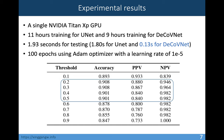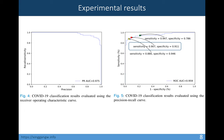Here are the precision-recall curve and the ROC curve. In the precision-recall curve, we obtained a very high PR AUC value of 0.975. In the ROC curve, there is a point with both sensitivity and specificity values higher than 0.9, which is good for clinical application.